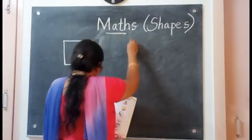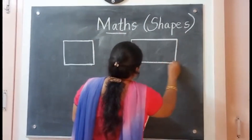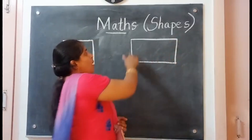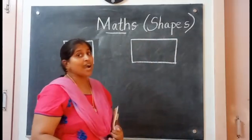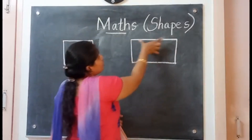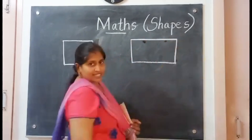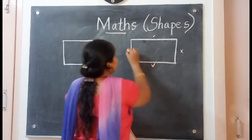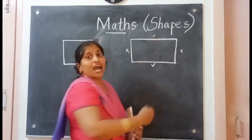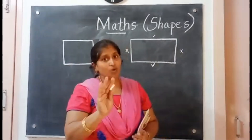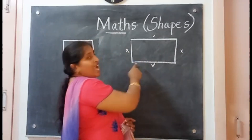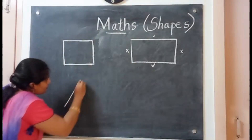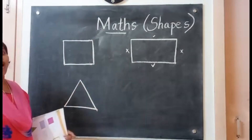The second one is rectangle. Rectangle also has four sides — one, two, three, four. But all the sides are not equal. See carefully: this side is long, this is short. Opposite sides are equal — this side and this side are the same, this side and this side are the same. In square, it has four sides and all the sides are equal. In rectangle, opposite sides are equal.